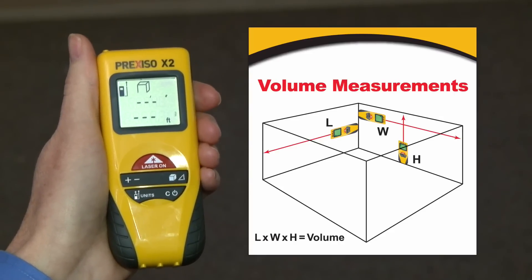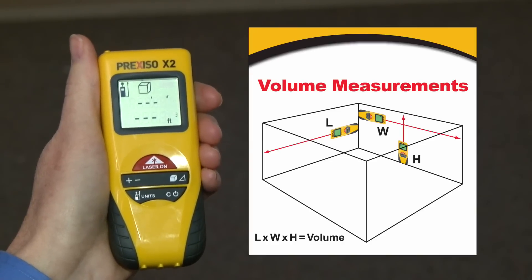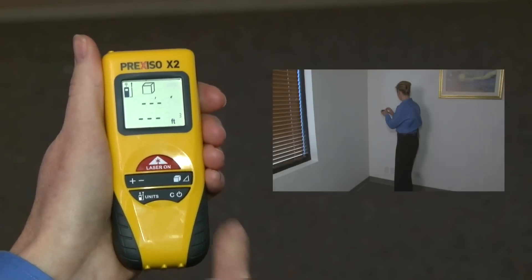It begins by prompting you to take your first measurement of the area by flashing one side of the cube. I simply line it up and press the red laser button and release.